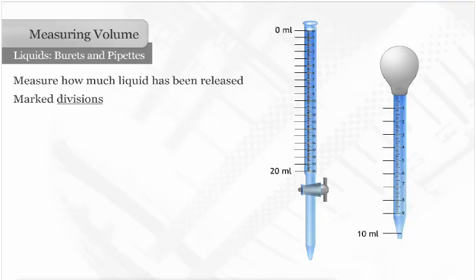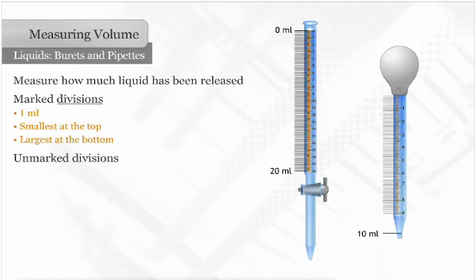The marked divisions on both instruments are equal to 1 milliliter and are smallest at the top and largest at the bottom. The unmarked divisions are equal to 1 tenth milliliter. This means that the volume can be measured to 1 hundredth milliliter.